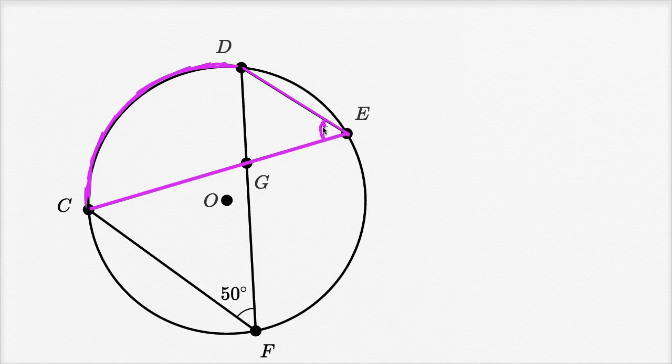And so the measure of this angle, since it's an inscribed angle, is going to be half the measure of arc CD. So if we could figure out the measure of arc CD, then we're going to be in good shape. So if we figure out the measure of arc CD, then we take half of that and we'll figure out what we care about.